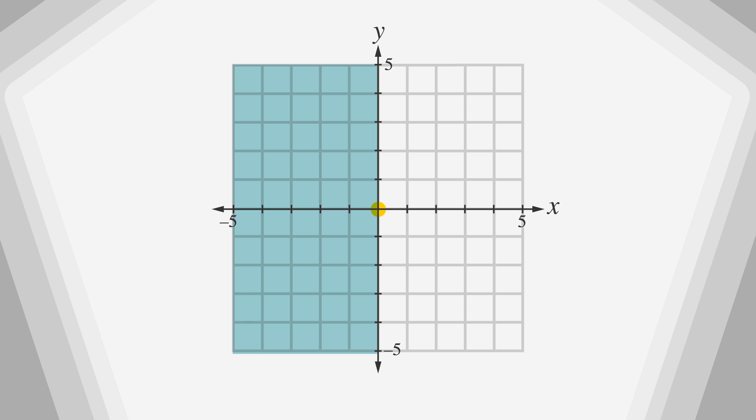To the left of the origin, our x values are negative, and to the right of the origin, they're positive. Above the origin, our y values are positive, and below the origin, our y values are negative.